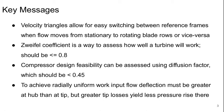The Zweifel coefficient is a way to assess how well a turbine is going to work and should generally be less than or equal to 0.8.